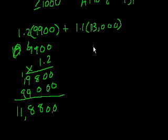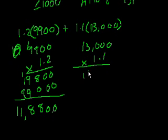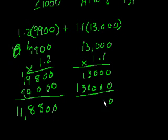And then 1.1 times 13,000. So it's 13,000 times 1.1. 1 times 13,000 is 13,000. 0. 1 times 13,000 is 13,000. 0, 0, 0, 3, 4, 1. And we have one number behind the decimal. So it's 14,300.